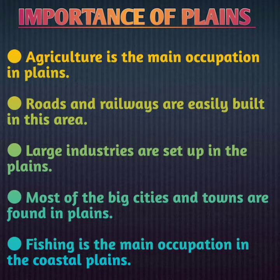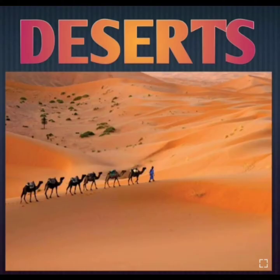Most of the big cities and towns are found in the plains because transportation is easy and facilities can be easily provided to people, so most people prefer to settle in such areas. The last point is that fishing is the main occupation in the coastal plains — the plains near the sea are where fishing is the primary occupation.